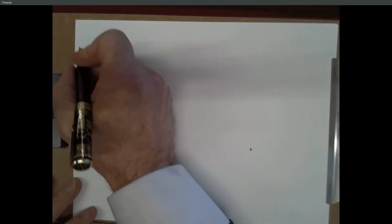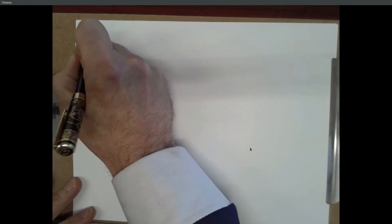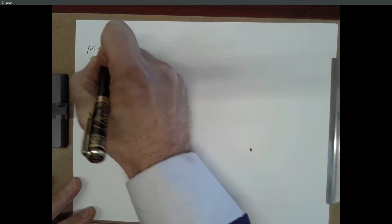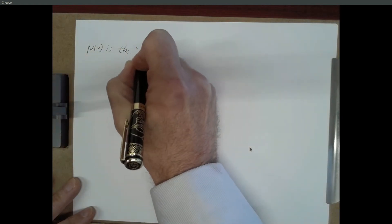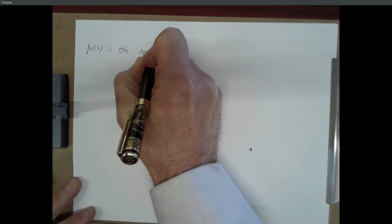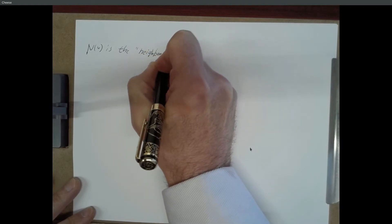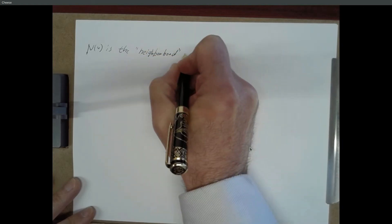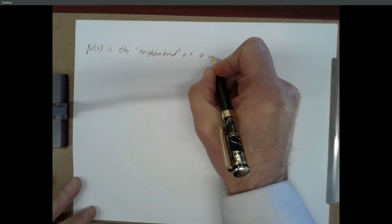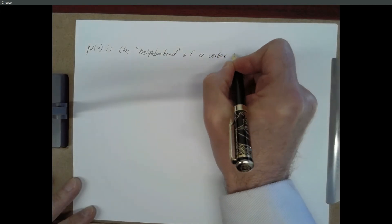So, let's do some theorems. More definitions. There's a lot of definitions when we talk about graphs. N of V is the neighborhood of a vertex V.